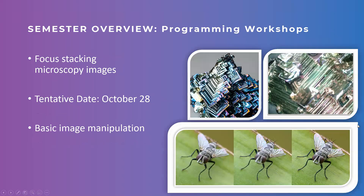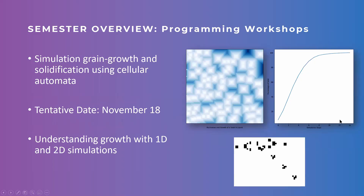For October, the next tutorial will be focus stacking with microscopy images of bismuth. Focus stacking — as illustrated by the fly image in the bottom right corner — involves combining images with different focal lengths. The front of the fly is in focus in one image and the back in another. This is a common problem with optical microscopes, and we can combine both focused aspects to create one overall in-focus image using actual samples photographed in the McMaster labs.